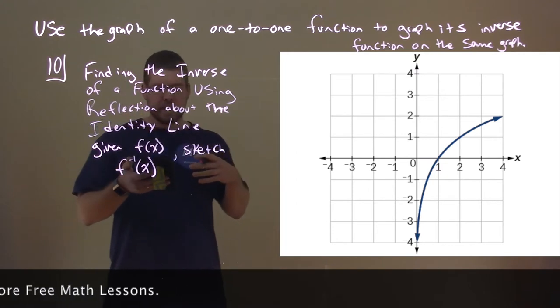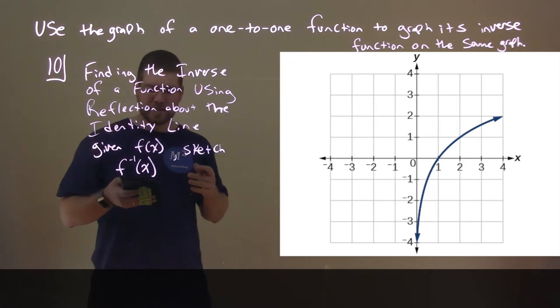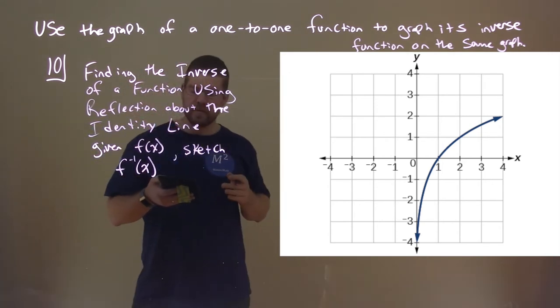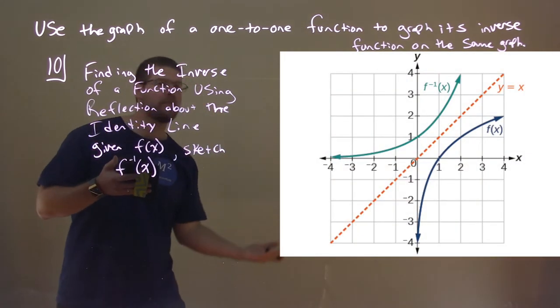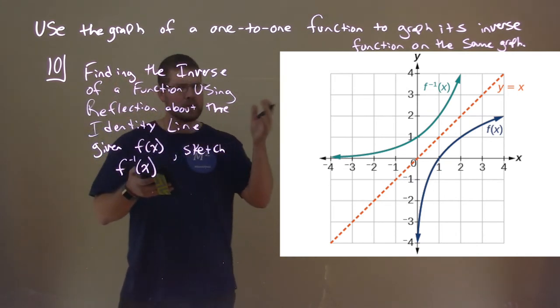Notice that it passes the horizontal line test, and so we can sketch the inverse. So, if we sketch the line y equals x here, the dotted orange line, we can see its reflection. F inverse of x there. But what do we notice here? There's a few things we want to talk about.